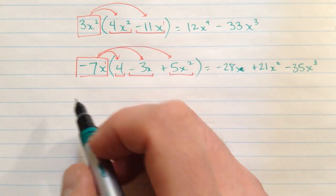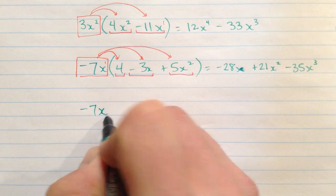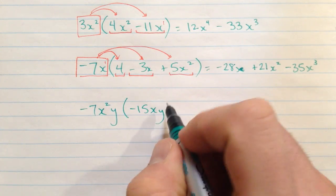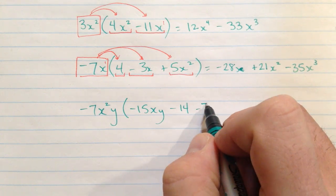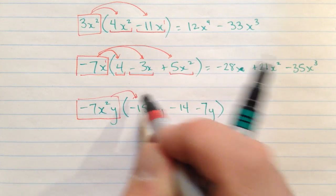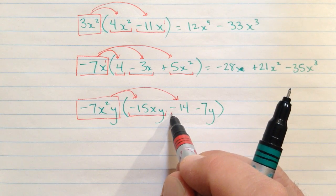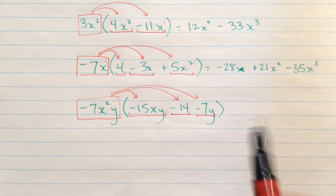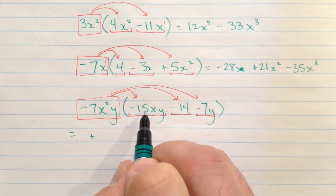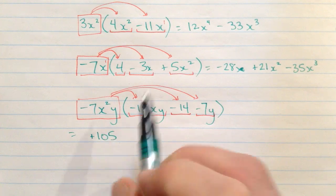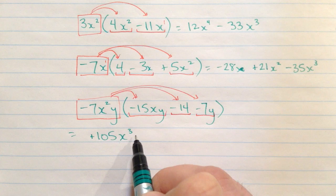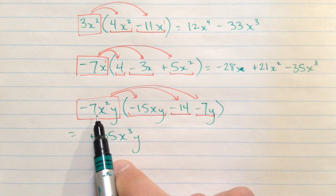Okay, now these have all been just x's, and any variable letter is fine, but you could have more than one. So let's do one like that. Negative 7x squared y times negative 15xy minus 14 minus 7y. I'm going to write stuff underneath here as I do this. So again, here's what I'm multiplying by. We're going to multiply by this term, by that term, there's a negative 14, and the last term is negative 7y. Okay, let's start with this. Negative 7 times negative 15. That'll be a positive answer. 7 times 15 is 105. Now let's look at the variable parts. The x's, 1, 2, 3 of them. And the y's, I have 2 of them. So that's the first term I get for multiplying this by this.